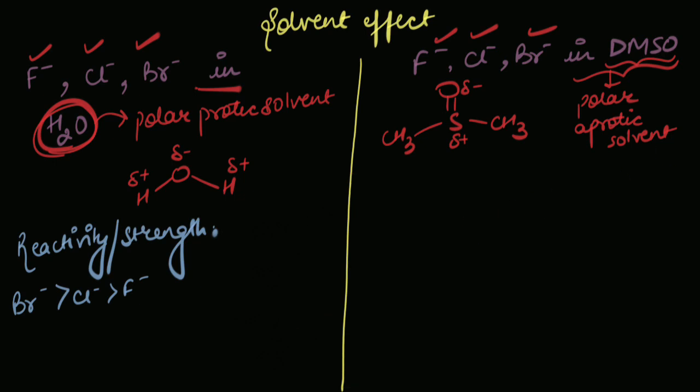So, in this case, fluoride ion would have the smallest size, it would have the most concentrated charge, and therefore it would be the strongest nucleophile out of the three.